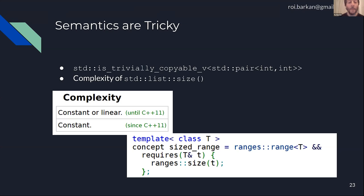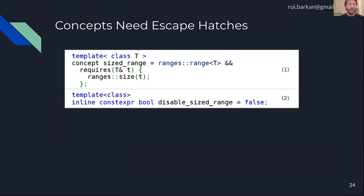The STL implementers understood this could be tricky and didn't want the compiler to treat any container that has a size operator as a sized_range. So they implemented a very specific escape hatch called disable_sized_range. This is not a concept, it's a constexpr Boolean, and its default is false.